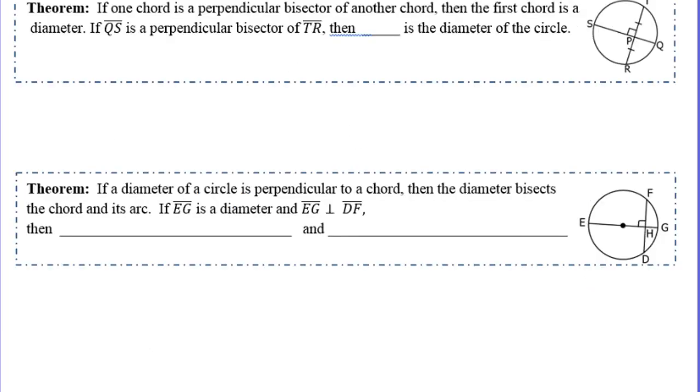We're going to go over a couple little properties here about circles. If one chord is a perpendicular bisector of another chord, then the first chord is the diameter. So if QS here is a perpendicular bisector of TR, then I can say that QS is the diameter of the circle. Perpendicular bisector means that it meets at 90 degrees and cuts it in half.